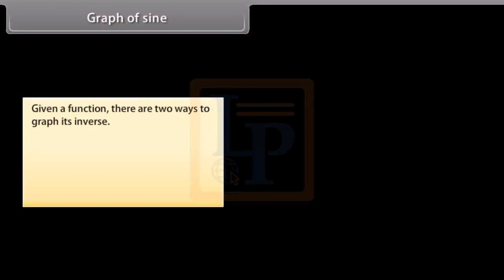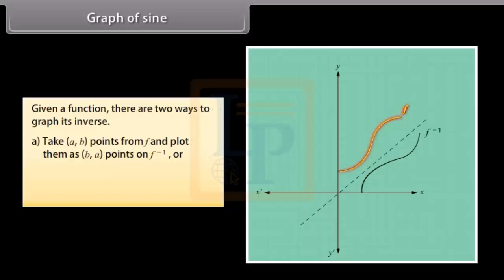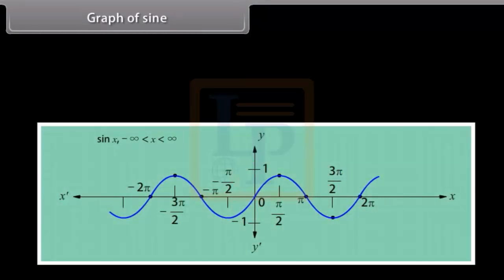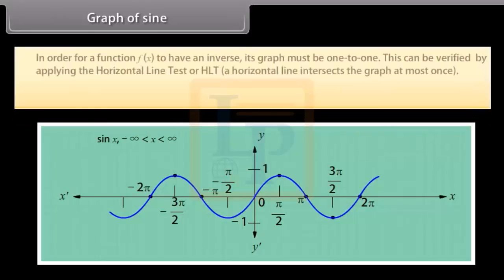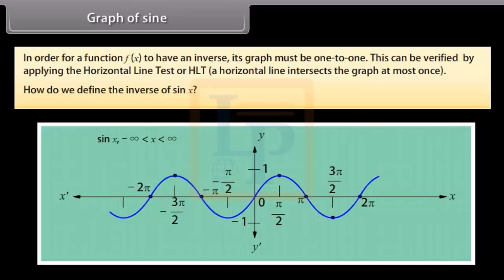Given a function, there are two ways to graph its inverse: first, take (a, b) points from f and plot them as (b, a) points on f⁻¹; or second, rotate the graph of f about the line y = x. We will begin by finding the inverse of the sine function. In order for f(x) to have an inverse, its graph must pass the horizontal line test (HLT). Clearly, the graph of sin x fails this test.